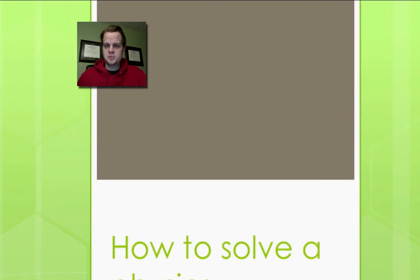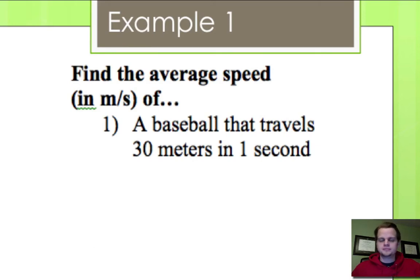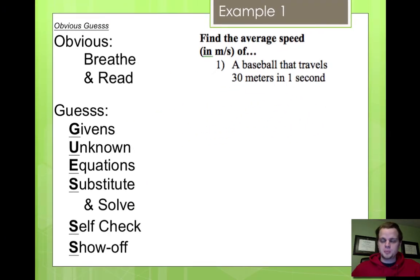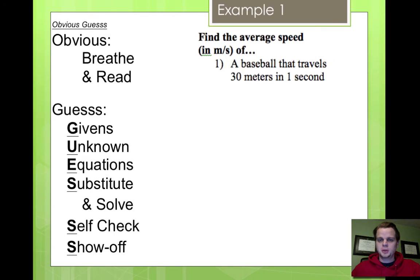Here we go with round two of how to solve a physics problem. This is where I go into at least a couple of examples for your first worksheet in physics. Here's the example: find the average speed in meters per second of a baseball that travels 30 meters in one second. What do we do first? Before we even read it, we take a breath — that's the obvious thing to do. Take a deep breath, then read the problem. Don't forget to do it multiple times.